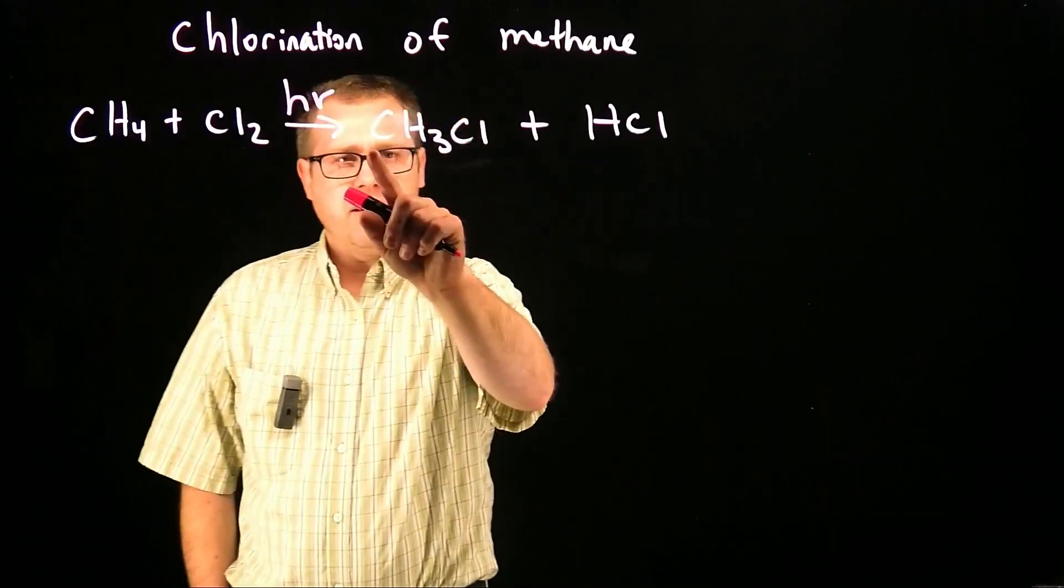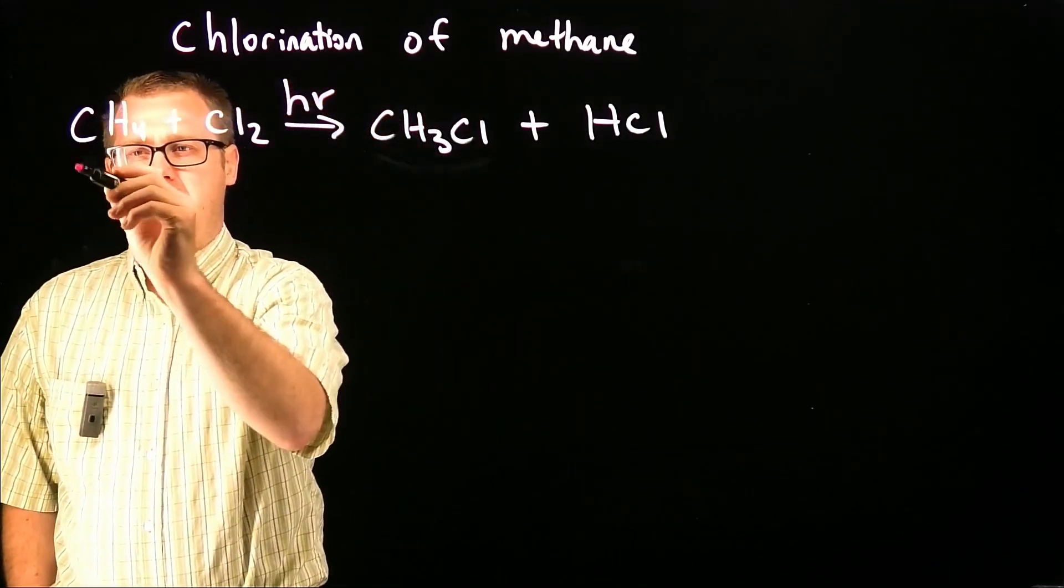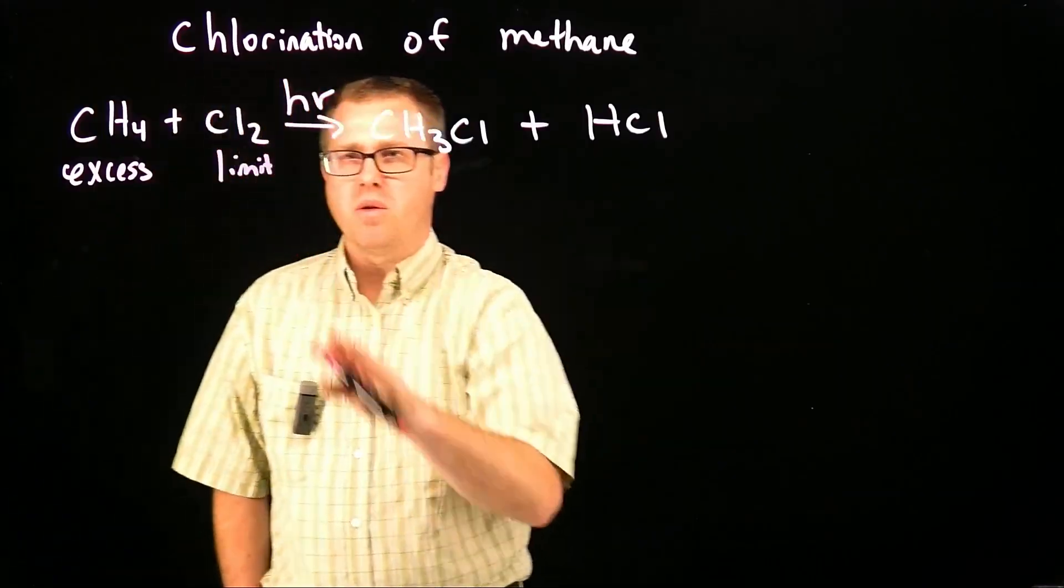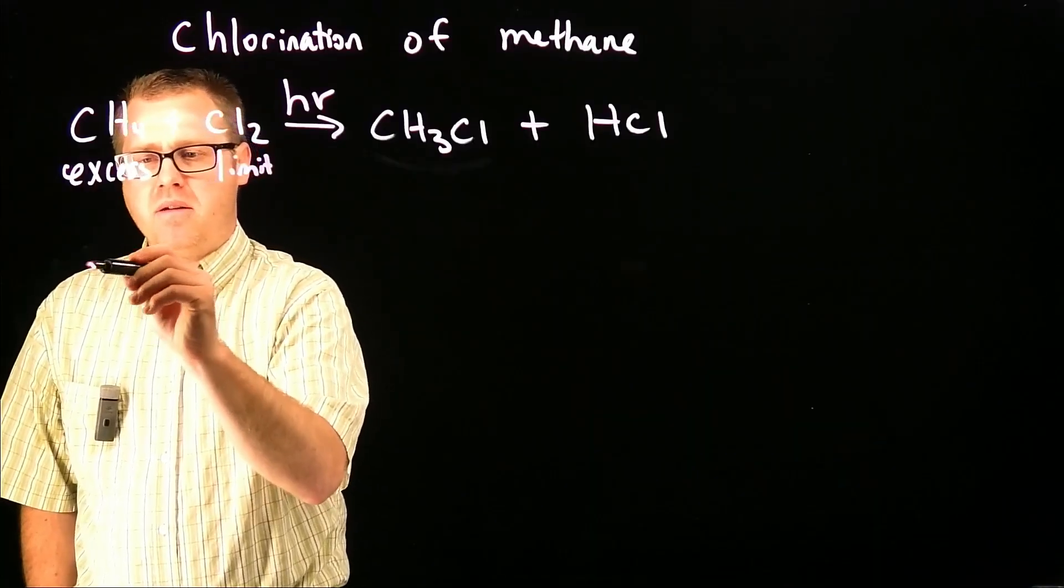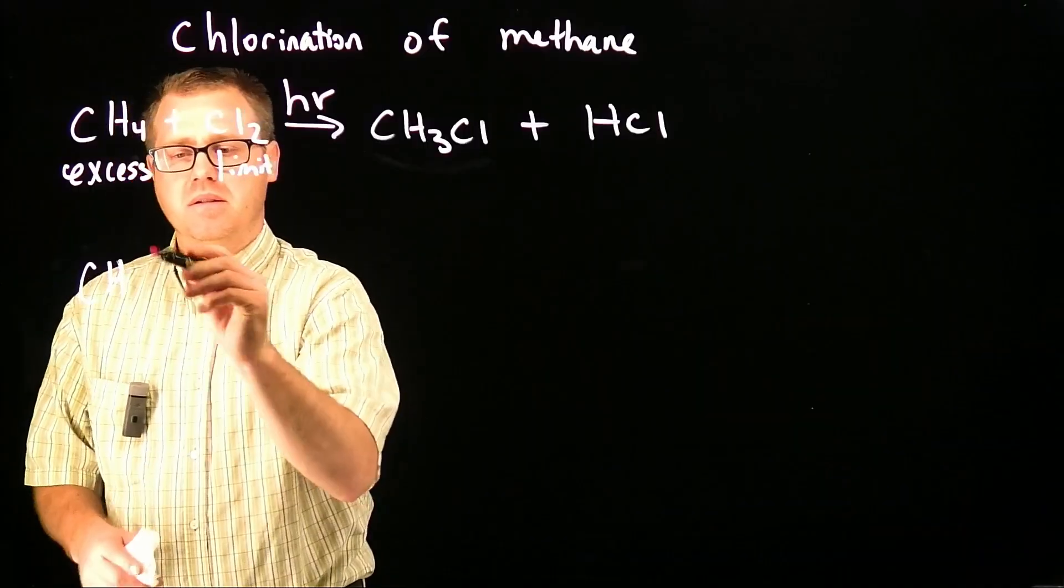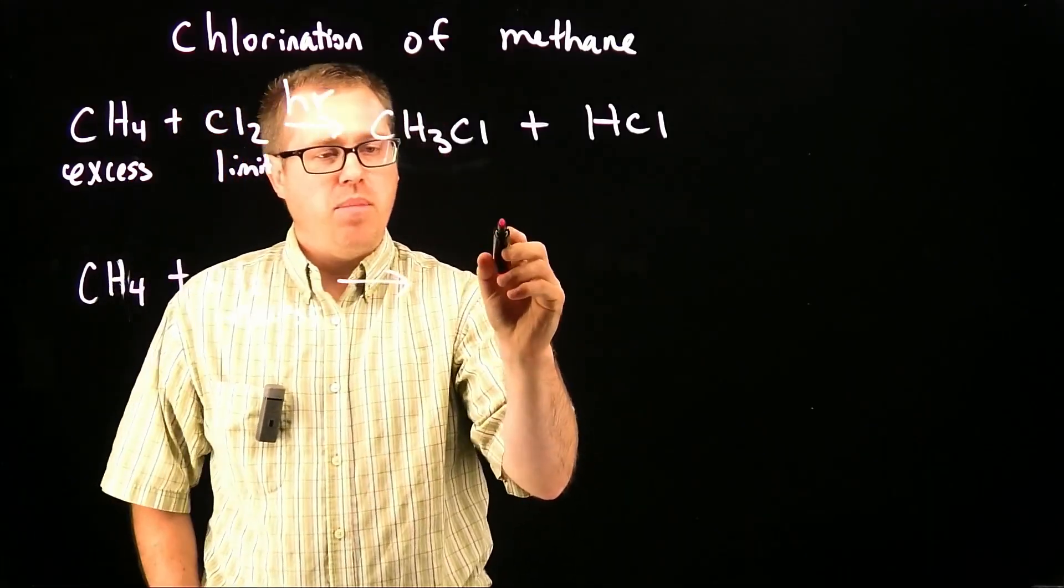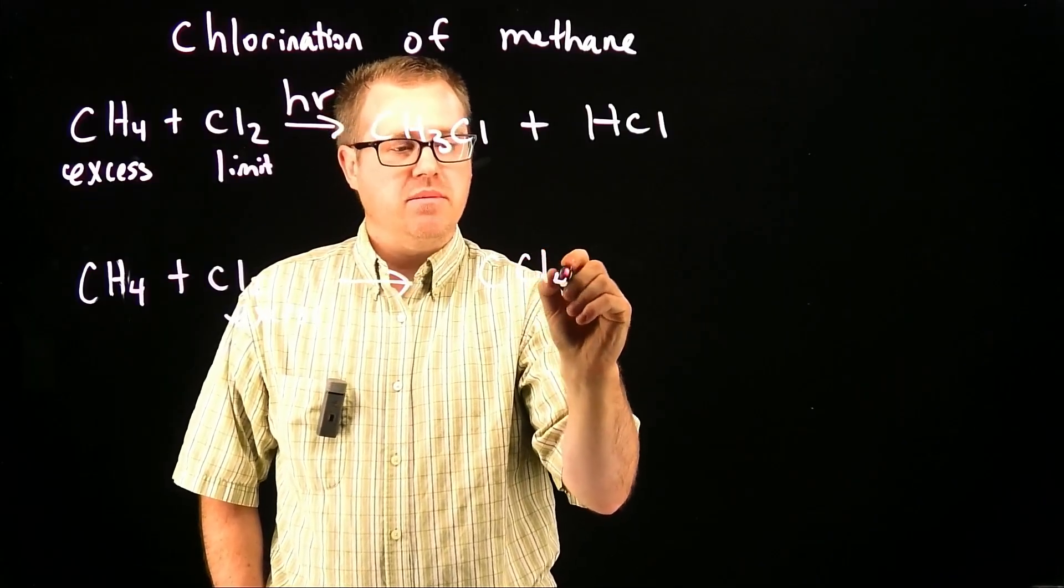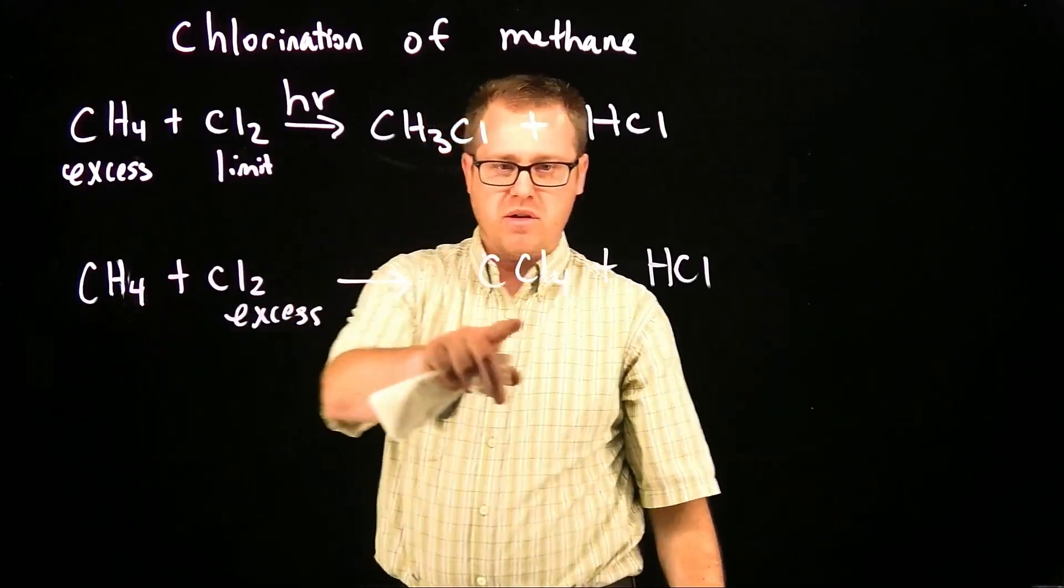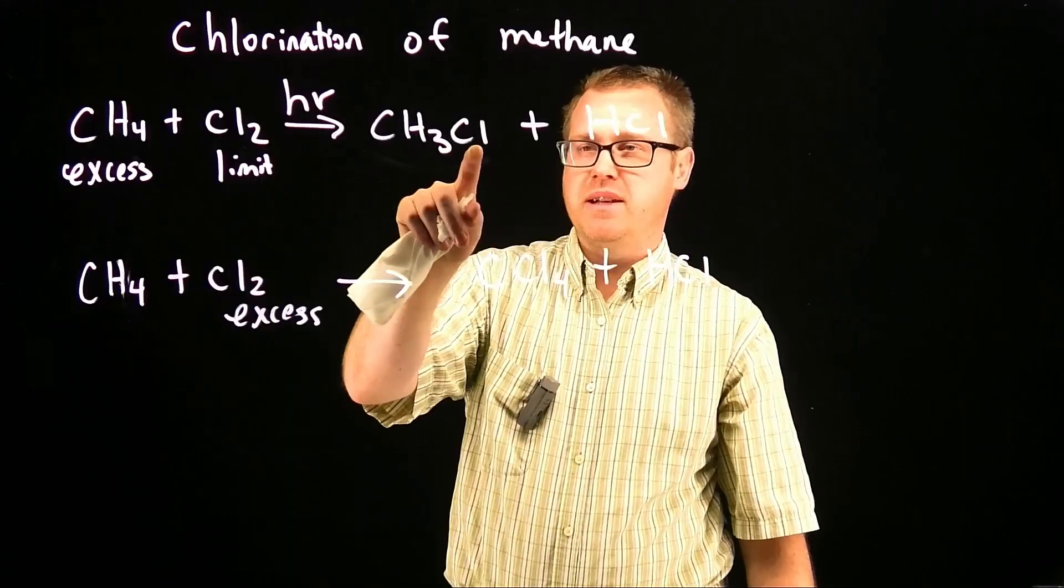Another thing, if you want this methyl chloride, you have to use the methane in excess and you're going to limit the amount of chlorine that you have. Because if it was the other way around, if you had your methane and you had excess chlorine, what you're going to do is get polychlorination. You'll replace all four hydrogens with a chlorine atom.